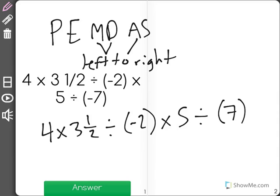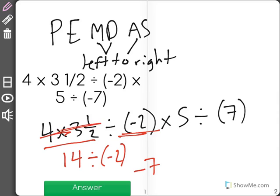So the first problem we have is 4 times 3 and a half, which will give us a total of 14. Now we have 14 divided by negative 2. 14 divided by negative 2 will give us a total of negative 7. So we're done with this part of the equation, and we have negative 7.